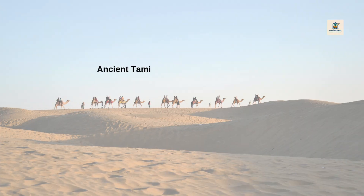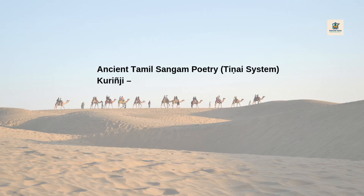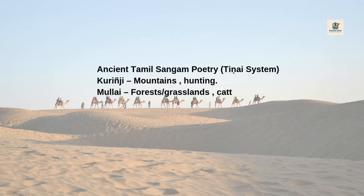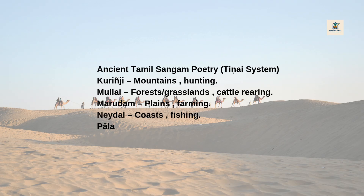Ancient Tamil Sangam poetry used the Tinai system to connect landscapes with human themes: Kurinji (mountains) — hunting; Mullai (forests/grasslands) — cattle rearing; Marudam (plains) — farming; Neytal (coasts) — fishing; Palai (deserts) — journeys and warfare.